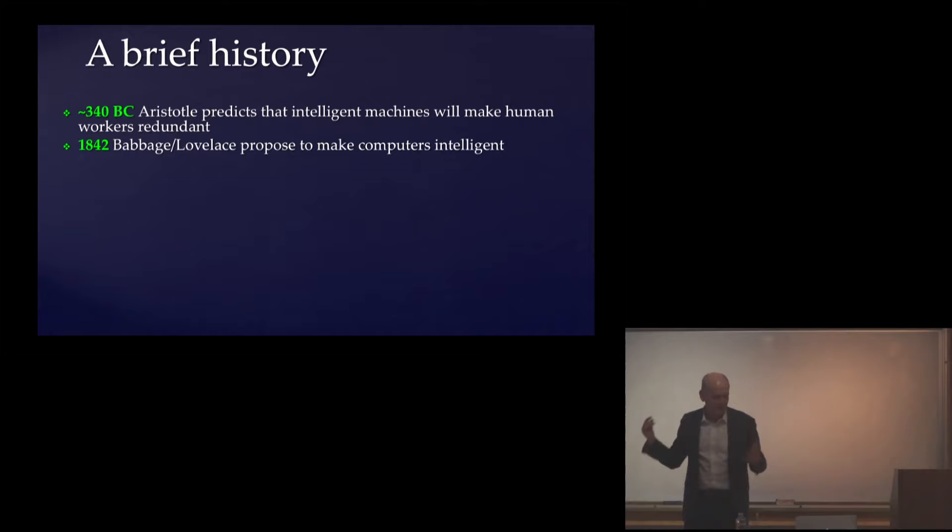Babbage had at least a plan for a computer, and Babbage and Lovelace talked very explicitly about how they'd be able to use that to do anything that the mind of man can be applied to could be done by these machines.